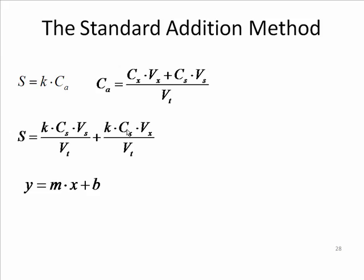v sub x is a volume that we chose to withdraw from the unknown solution. So v sub x is another constant. And v sub t is a constant. So this whole second term is a constant. It's starting to shape up like the equation of a line, where what we would think of as y, or being on the vertical axis, is simply the signal. And the x, the variable, is the volume of standard solution that has been added.